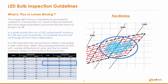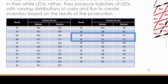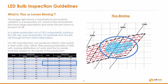To understand why multi-LED color mixing is an important and cost-effective manufacturing technique, consider the following hypothetical distribution of LEDs in a large production run, shown on the right-hand side with the blue dots. The image shows that hypothetical chromaticity variation in a production run — some bins have large populations and some have no product at all. In a given production run, luminous flux will vary over several bins, for example from lux bin Q5 through to R2 from the data table shown below. No LED manufacturer can produce uniform color points in their white LEDs; rather, they produce batches with varying distributions of color and flux.